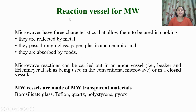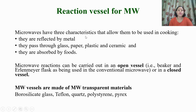Now let's see what type of reaction vessels can be used for microwave reactions. Microwaves have three characteristics that allow them to be used in chemistry: they are reflected by metal, they pass through glass, plastic, paper, and ceramic, and they are absorbed by food or the reaction medium. Because of these characteristics, they can also be used for carrying out chemical reactions.